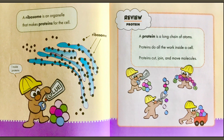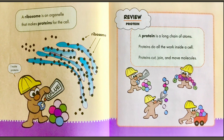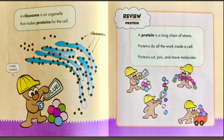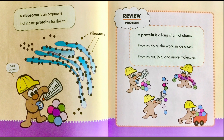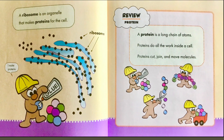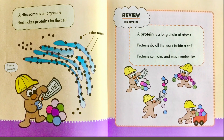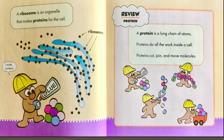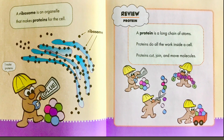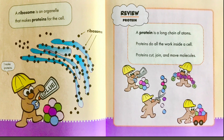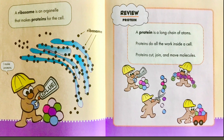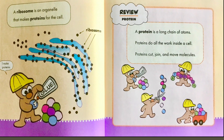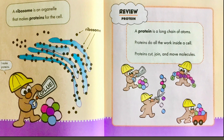A ribosome is an organelle that makes proteins for the cell. Those little dots you see are ribosomes — they make proteins. A protein is a long chain of atoms. Proteins do all the work inside a cell — they cut, join, and move molecules.